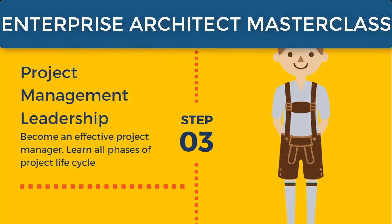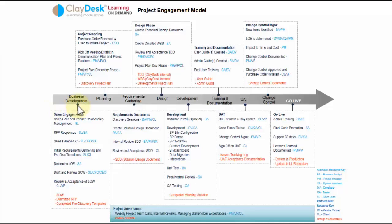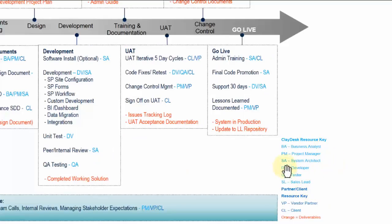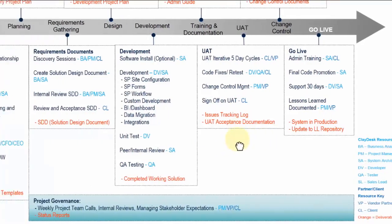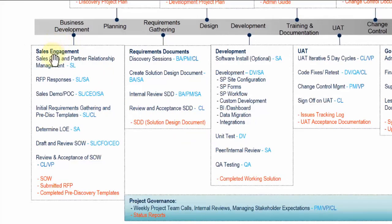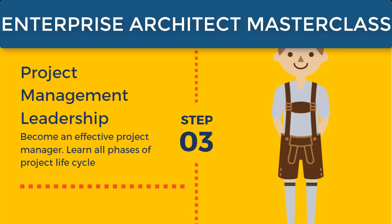Step three is the big one: project management. You as an enterprise architect need to be an effective project manager and understand the entire project life cycle — what happens during requirements gathering, when talking to a business analyst, the developer team, the solutions architect team, and so forth. This includes collaboration with stakeholders, team meetings, and all of the other areas we'll cover in this course.